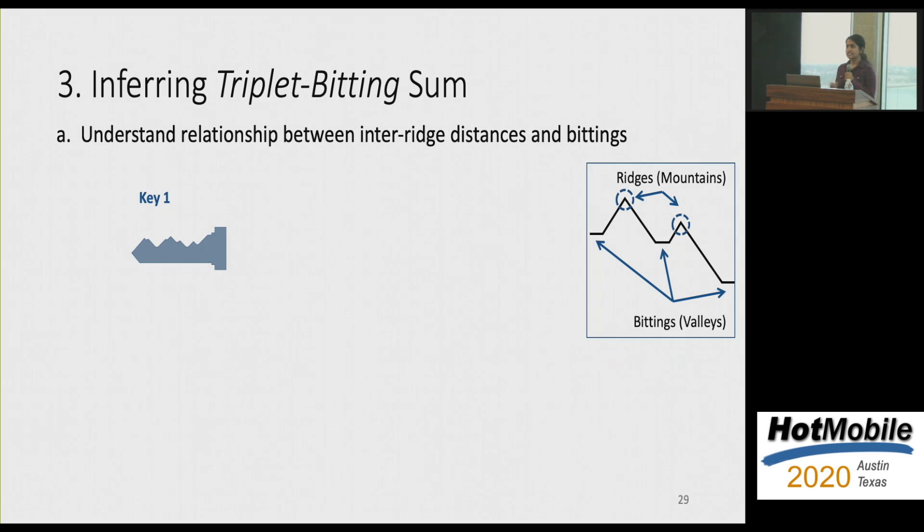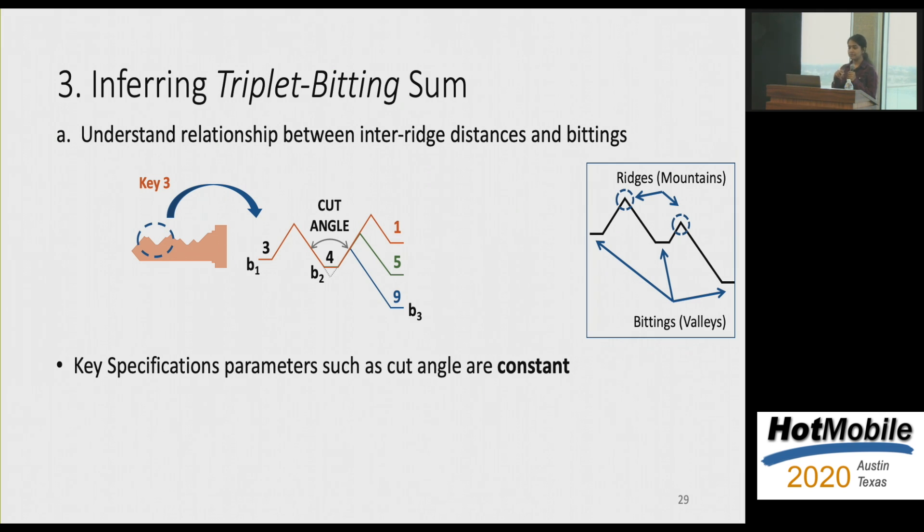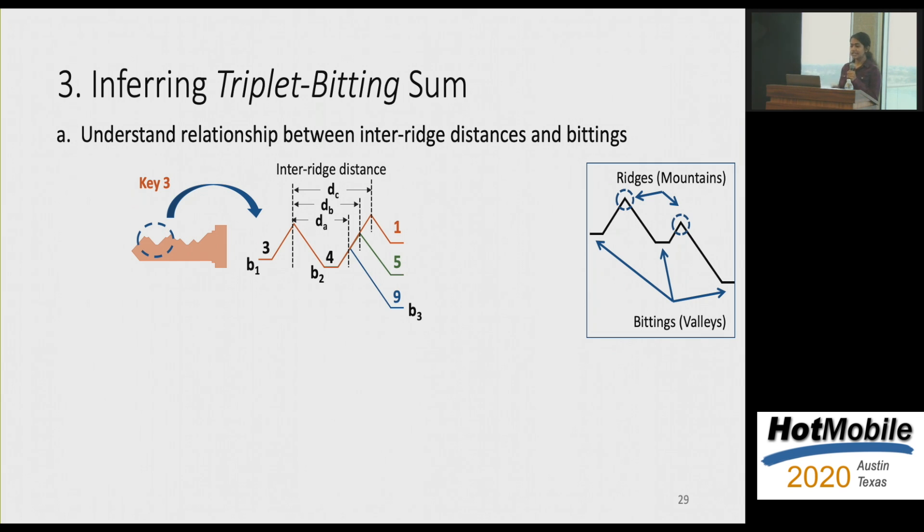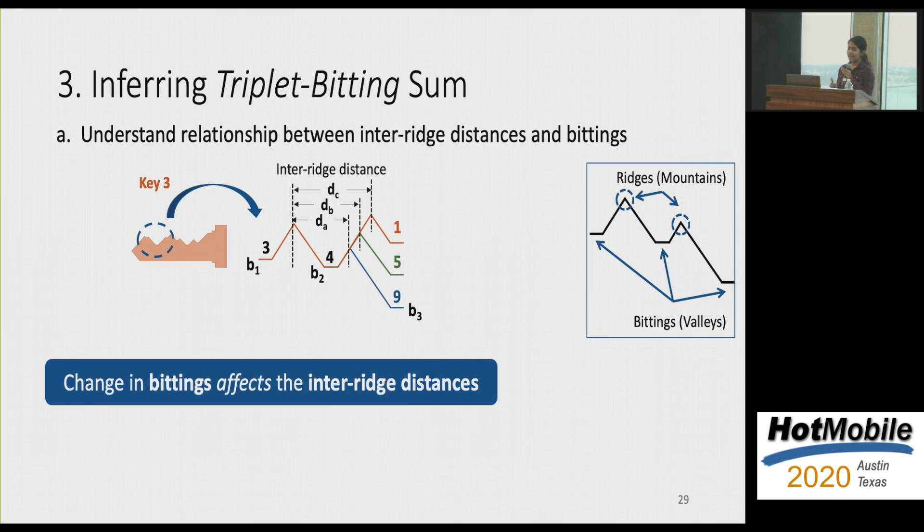So before we go on to this triplet bitting sum, first let's try to understand the relationship between inter-ridge distances and bittings, which are the key secrets. So let's consider a particular key and focus on the first three bitting positions. In this case, the values are 3, 4, and 9. Now if we consider a different key, which has a different third bitting position, 5 in this case, you can see that there's also a shift in the position of the ridge as the bitting value changed. So now if we look at a different key, which has a different third bitting position, again the value of the ridge changed with the change in the bitting position. So what's really happening is that because the cut angle or the angle at a bitting position remains consistent from key specifications, every change in the bitting value is actually affecting the ridge position as well. So because the ridge position is changing, you can also see how the inter-ridge distance is consistently increasing for the three different keys. So the key takeaway from this slide is the change in bitting value is in fact affecting the inter-ridge distance.